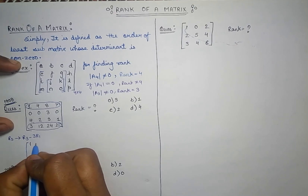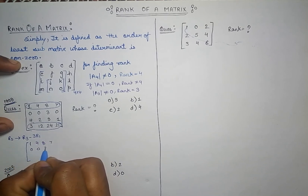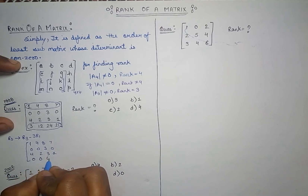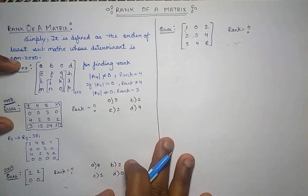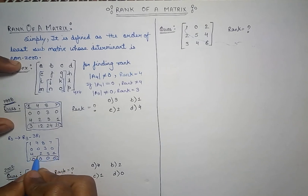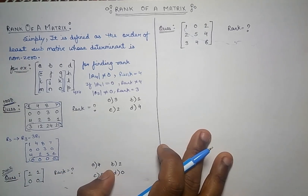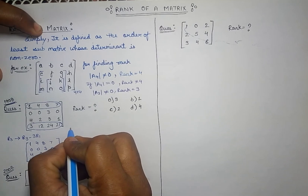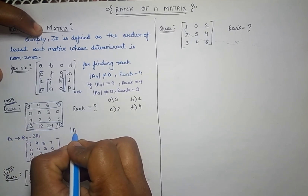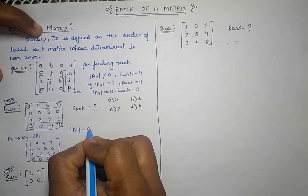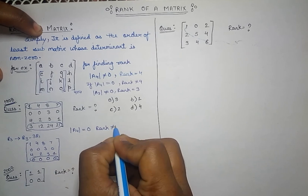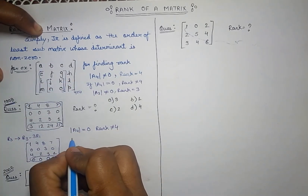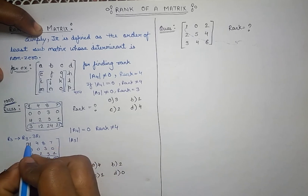After applying the transformation, the matrix becomes: row 1 is [1, 4, 8, 7], row 2 is [0, 0, 3, 0], row 3 is [4, 2, 3, 1], and the last row becomes all zeros [0, 0, 0, 0]. Since the last row is entirely zero, the determinant of the 4×4 matrix equals 0. Therefore the rank is not 4, and we need to search for a 3×3 sub-matrix.